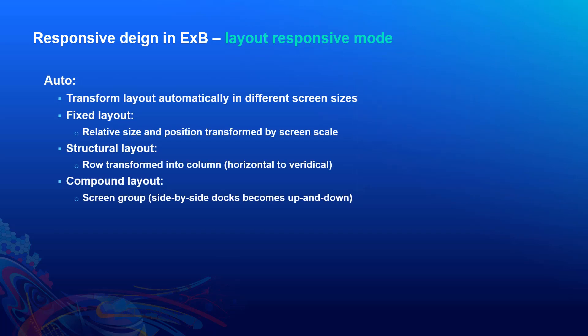In Auto mode, the layouts are transformed automatically. There are several transform rules. If you use a fixed layout, a widget inside set with relative position and size will be transformed by scale. If you use a structural layout such as a row, it will be transformed to a column — so in small screen, horizontal arrangement becomes vertical. If you use a compound layout such as a screen group, Experience Builder also handles the transformation. For example, side-by-side docks of a screen will become top-to-bottom in smaller screens.